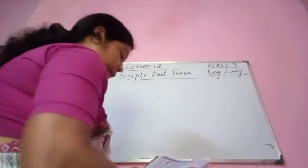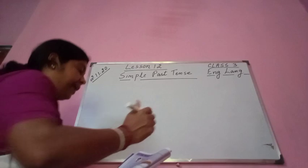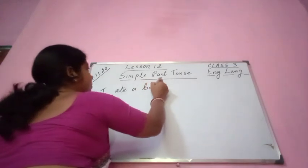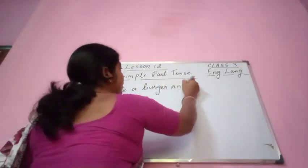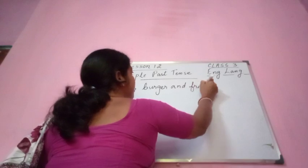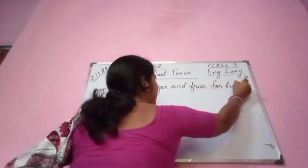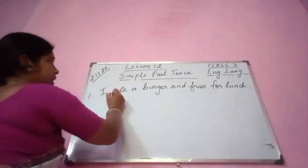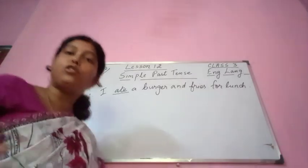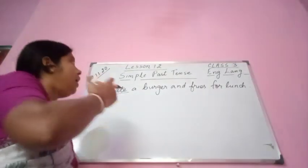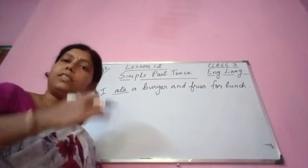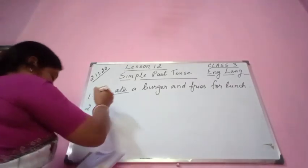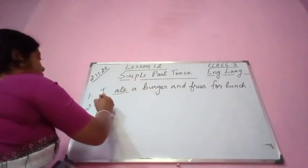Please follow children, here I am writing — please see. This is page number 70. The three past tense sentences are: 'I ate a burger and fries for lunch.' Any action that happened in the past is known as past tense. The verb is 'ate' — that means you have already eaten. Second sentence: 'Karan climbed the hill in an hour.'